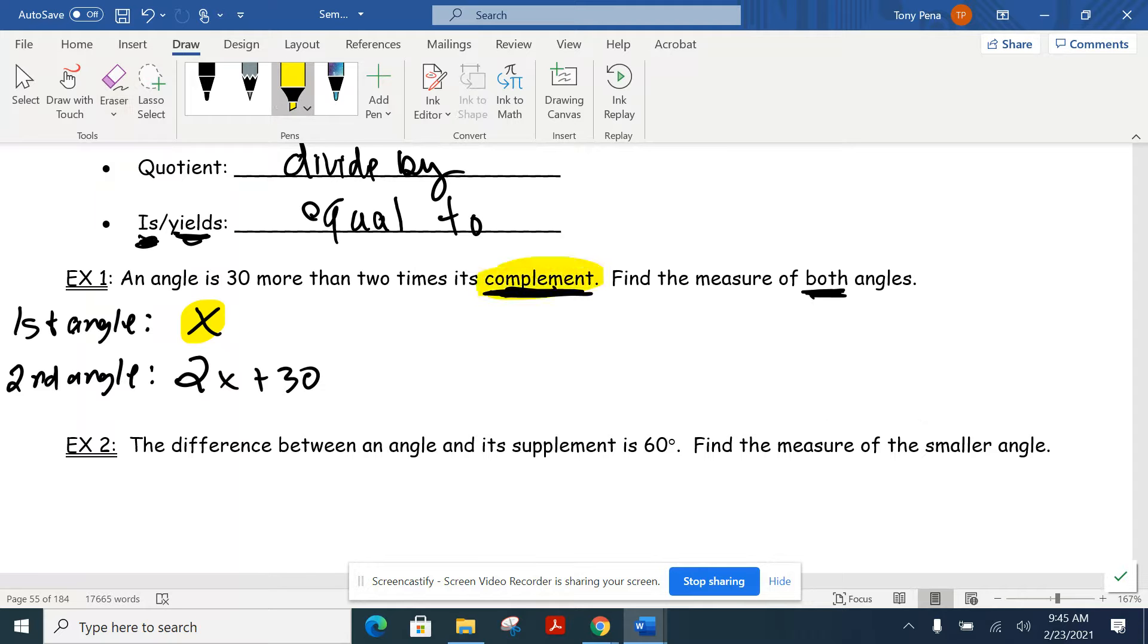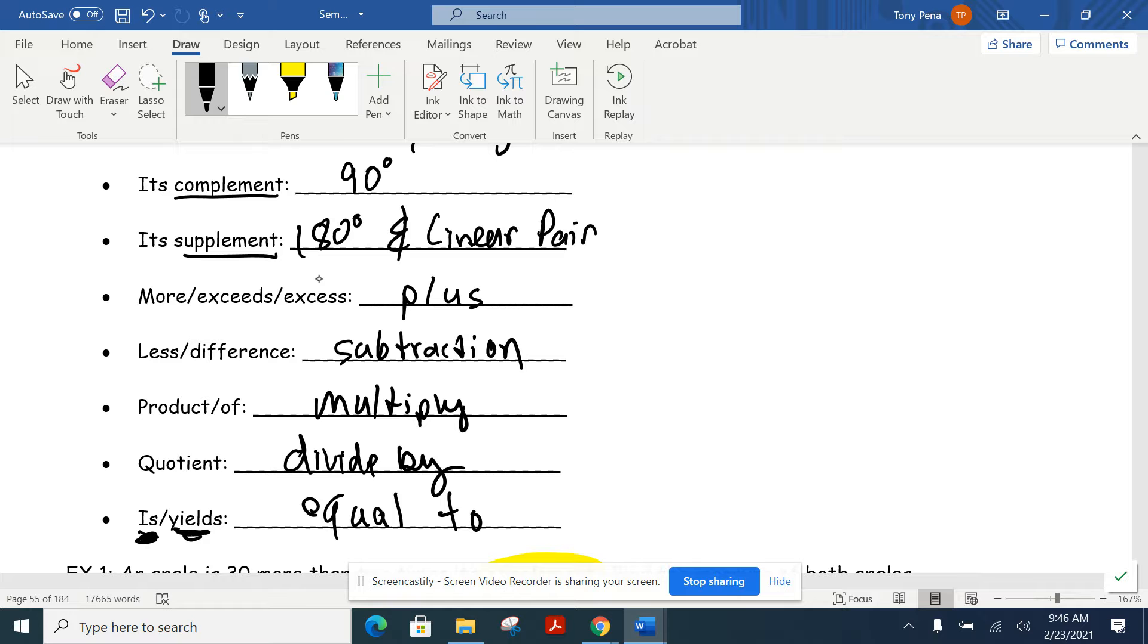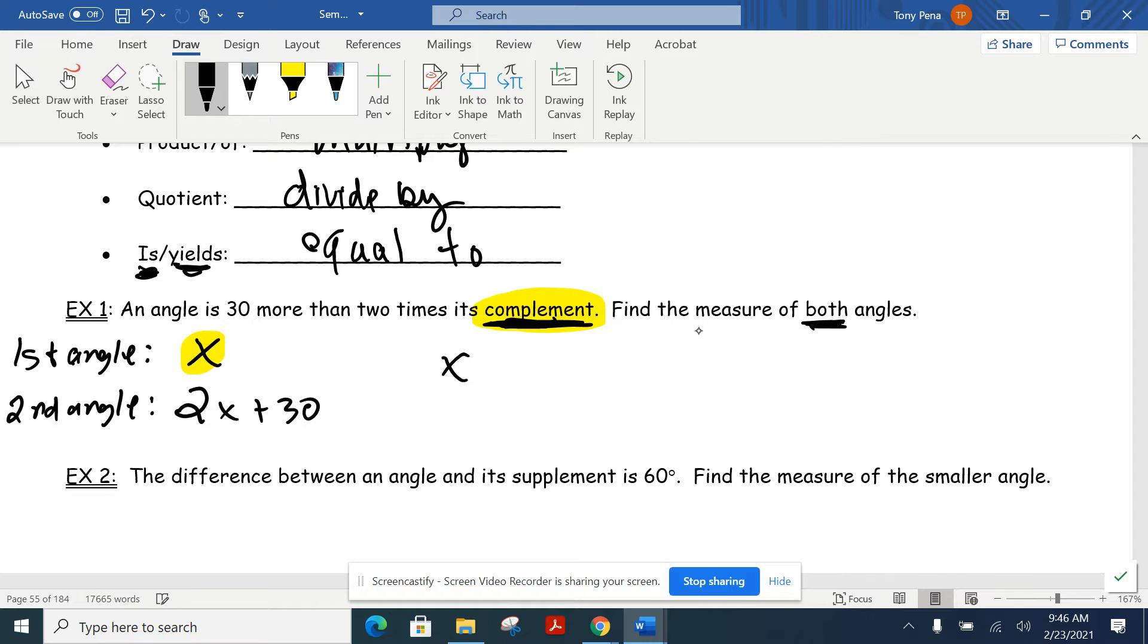Now we want to deal with this idea that these are complements of each other. So complementary that we now have just done recently. Complements mean their sum is 90 degrees. So this is what we have been doing now. That means when we add those together, so the X plus the 2X plus 30, they both together add up to give us 90 degrees. From there, we should be ready to crank this out. So combine your like terms. We have 3X plus 30 equals 90. Subtract 30 from both sides. X is going to be 20. Make sure we are answering our question.